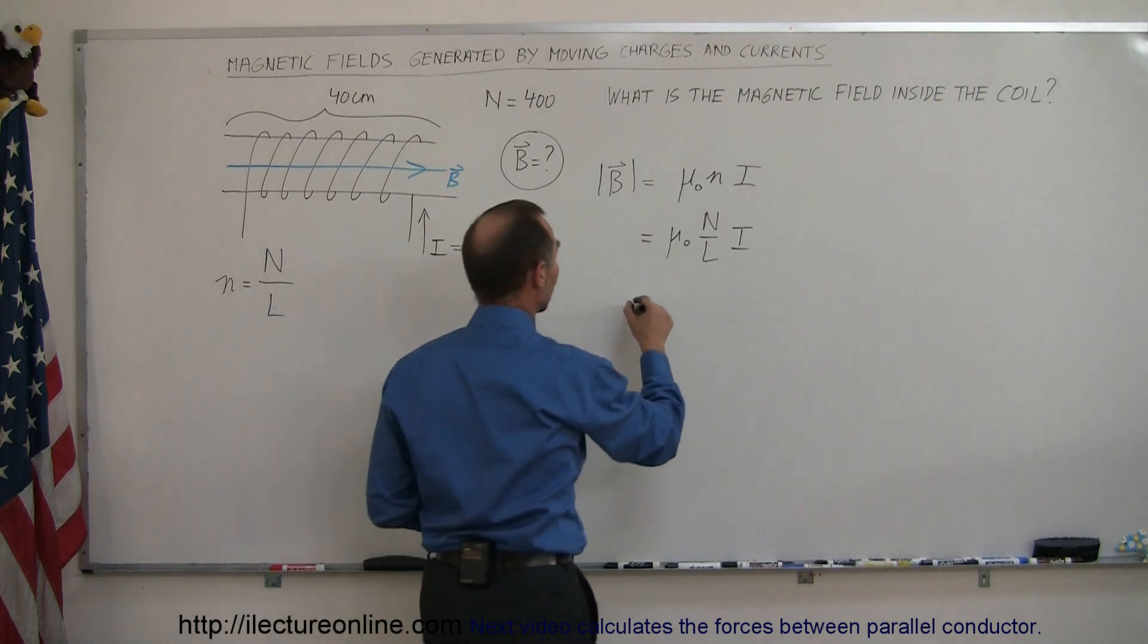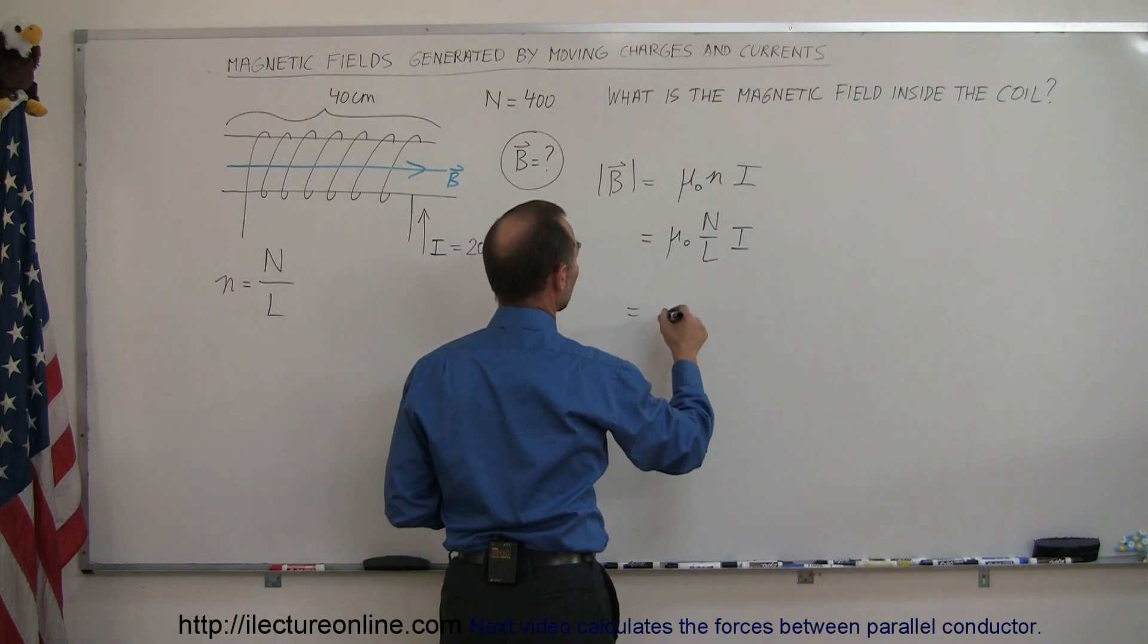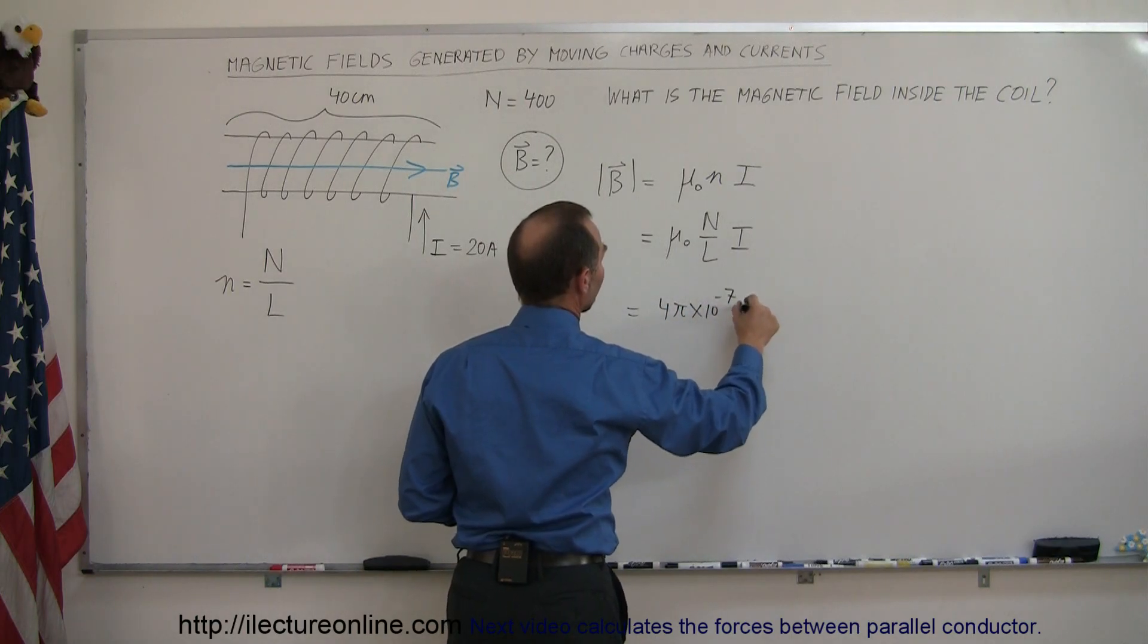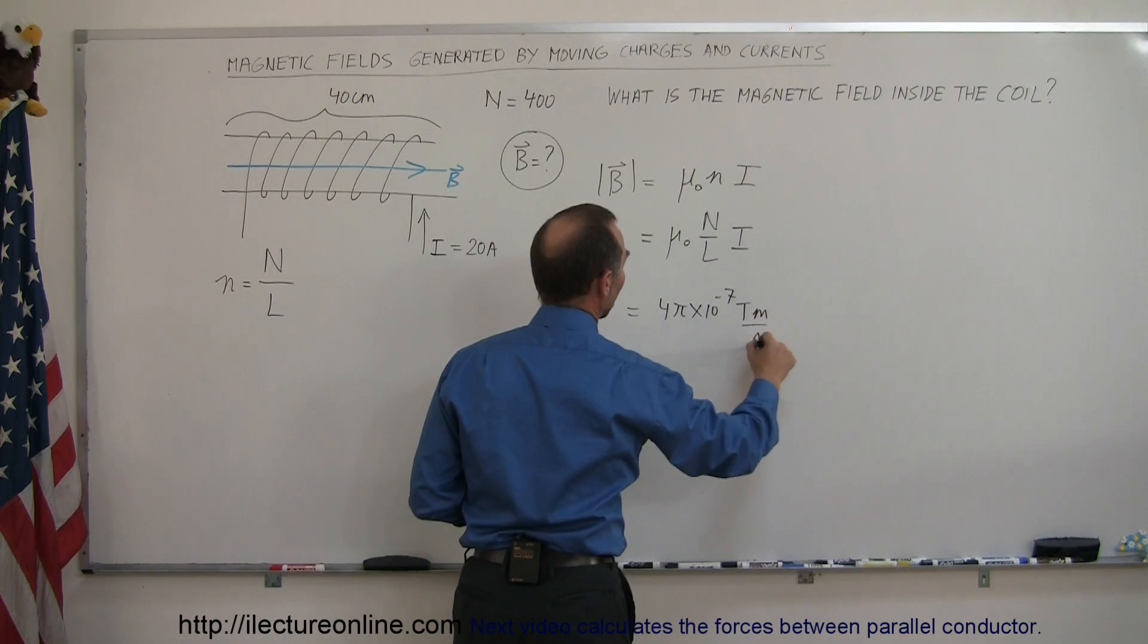So now go ahead and plug in the numbers. μ₀ is equal to 4π times 10 to the minus 7, teslas times meters divided by amps.